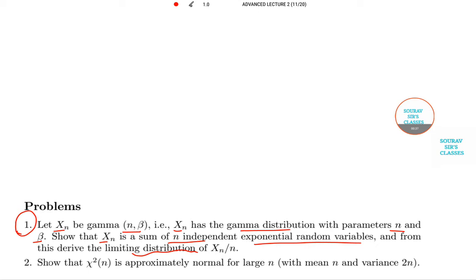Now you should know that Mxn is equal to 1 by 1 minus beta t to the power n, where this term 1 by 1 minus beta t is the moment generating function. So let me write it, moment generating function of an exponential random variable.